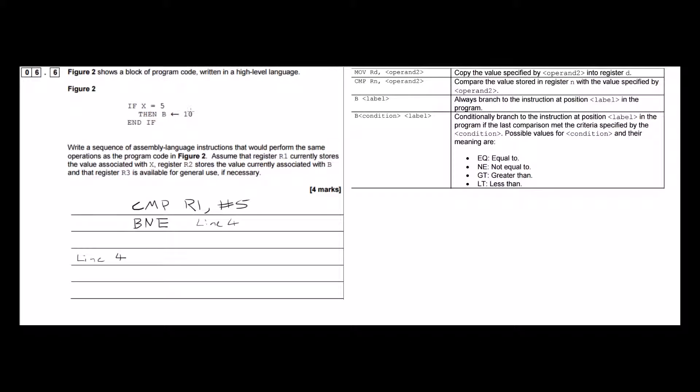And this part of the program is storing 10 in B. And our question tells us that register 2 stores the value associated with B. So we're going to be storing the decimal value 10 in register 2.